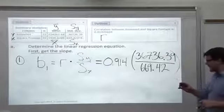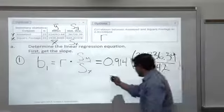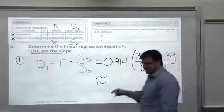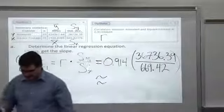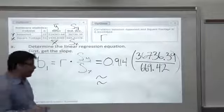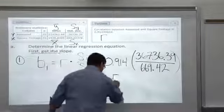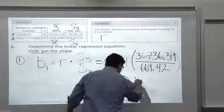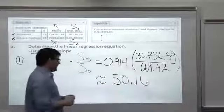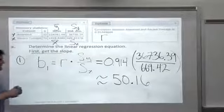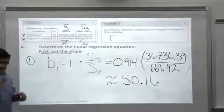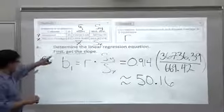We know this will be positive because the correlation is positive. We've seen that positive direction on the scatter plot. Put a squiggly equals. Of course there's some rounding going on. Let me find the answer here: 50.16 is what I got. So that's the slope. Keep that number handy.